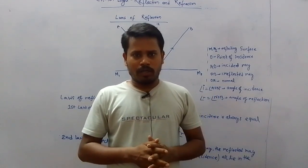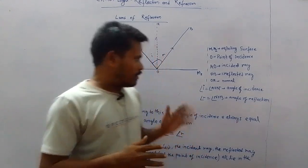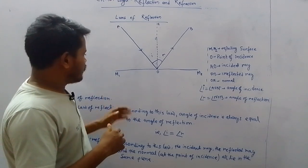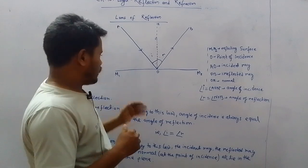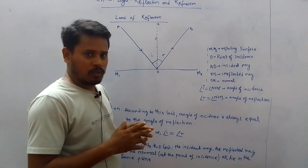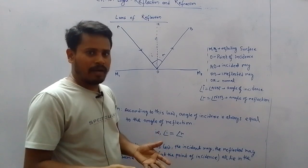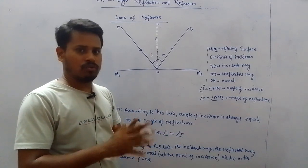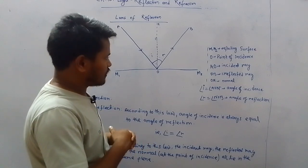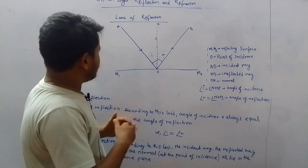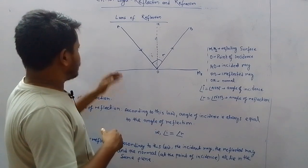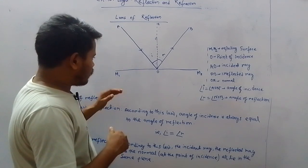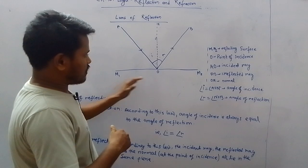Let us move on to the discussion. Here, laws of reflection is written at the top of the board. You can see a reflecting surface M1M2. The surface where reflection takes place is known as the reflecting surface. On this surface, a light ray comes from point A along the path AO and falls on point O on the surface M1M2.